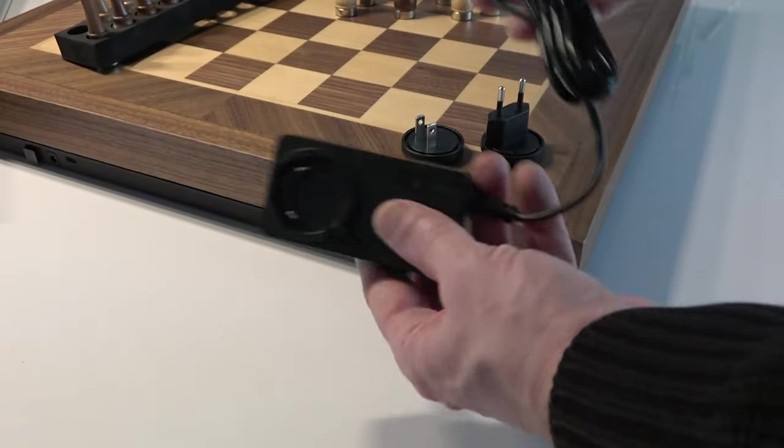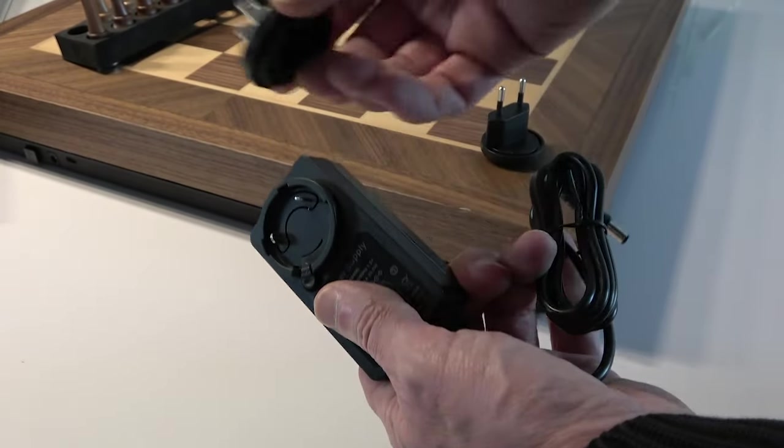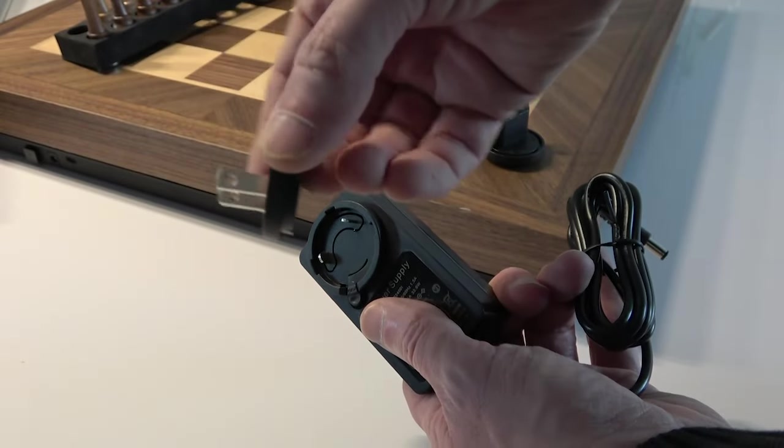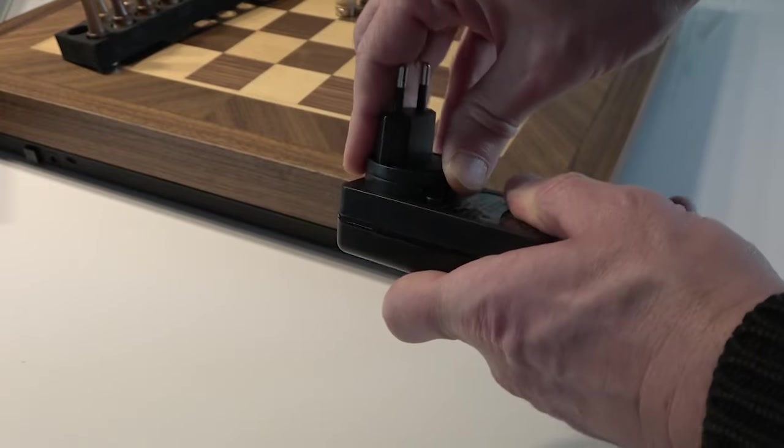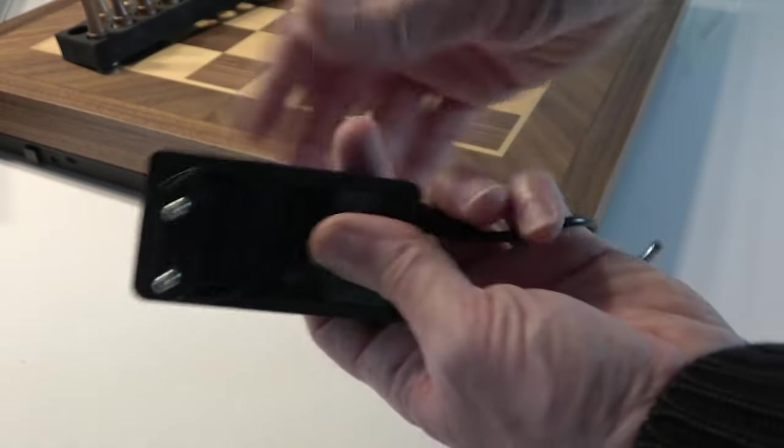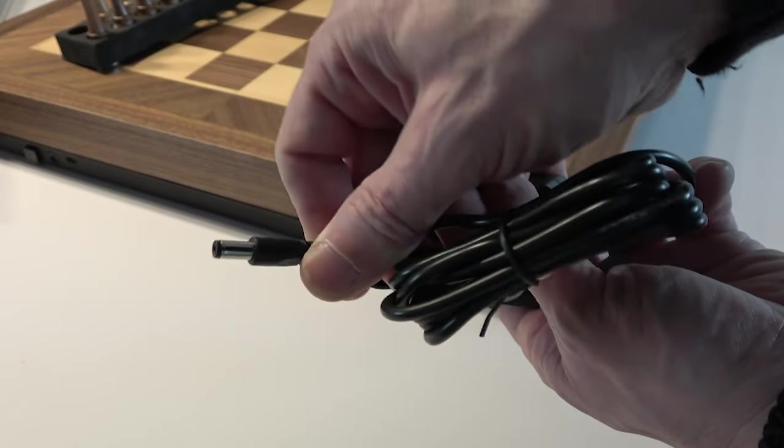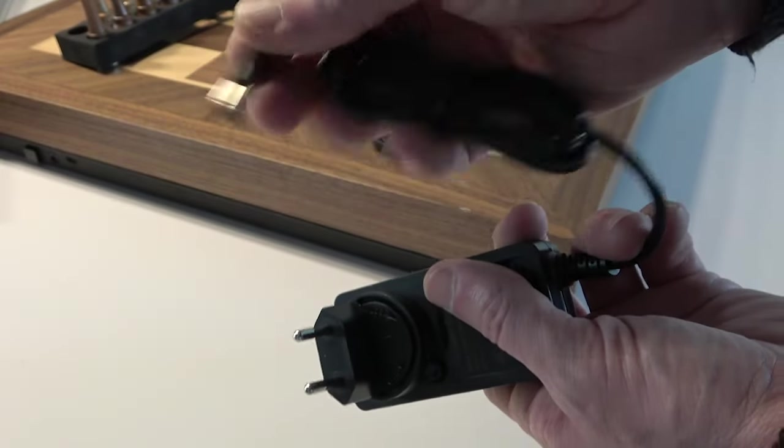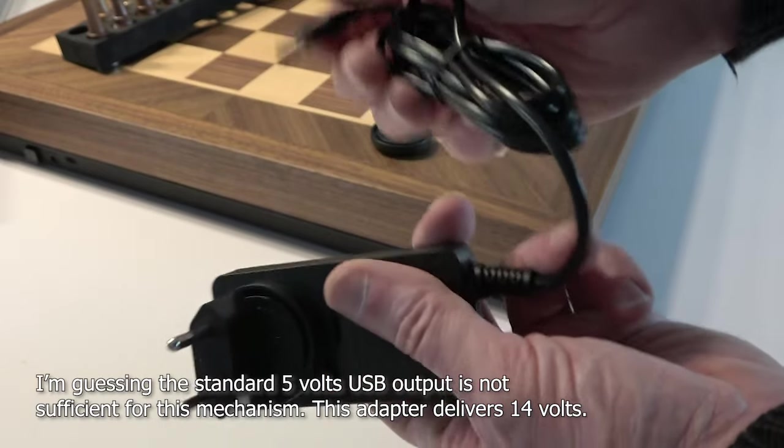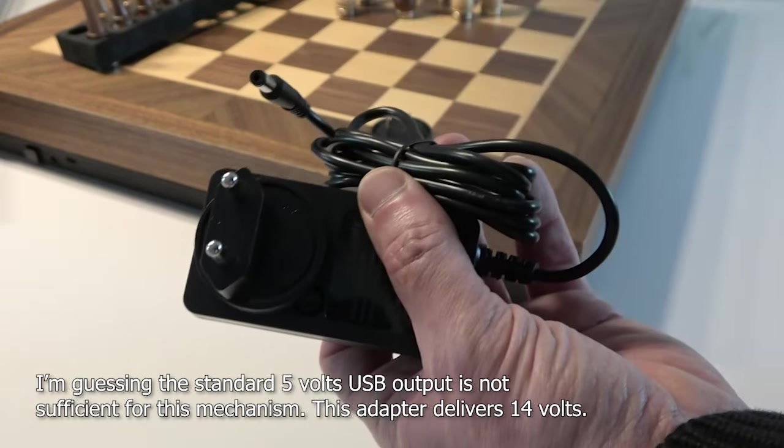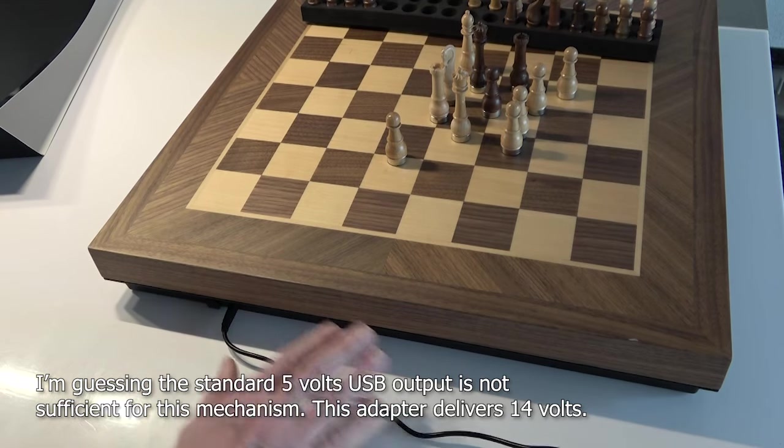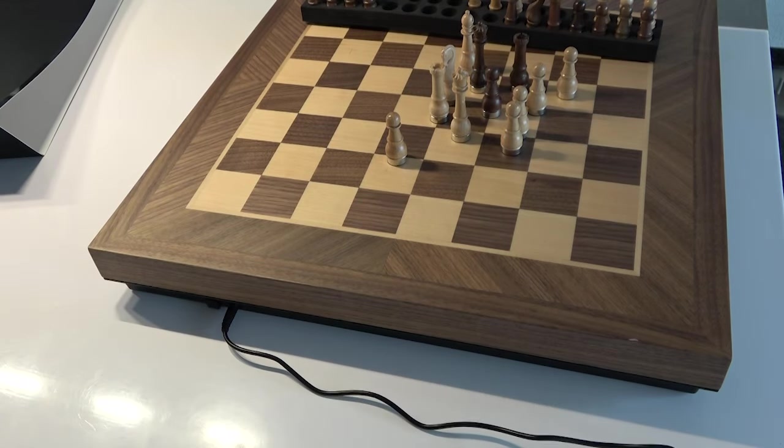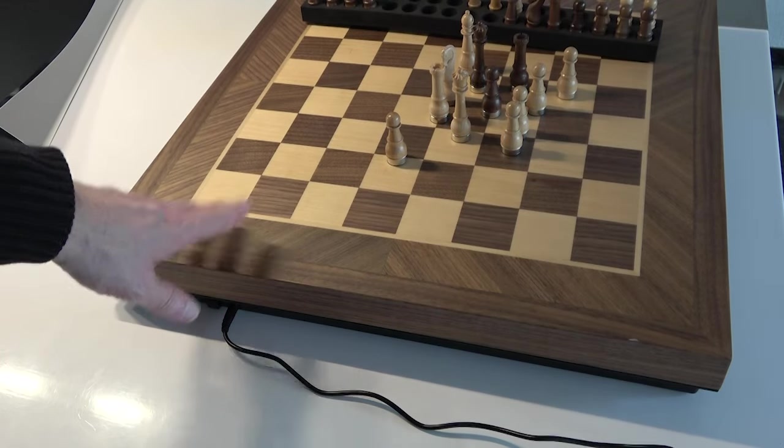Then we have the power adapter which comes with two plugs. This is the American one and this is the European one which I'll be needing. So you can just click that on here. I think this really should have been USB. This is a little outdated, but if it works, it works. The cable itself is quite short. It's about a meter and a half. So keep that in mind. You might need an extension cord if you didn't opt for the cordless version.